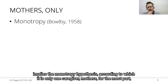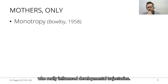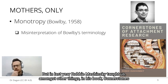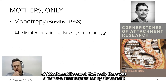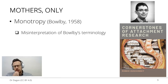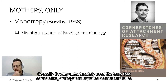This implicitly implies the monotropy hypothesis, according to which it is only one caregiver — mothers, for the most part — who really influences developmental trajectories. But as Robbie Duszynski taught us in his book 'Cornerstones of Attachment Research,' there was a massive misinterpretation by attachment researchers of Bowlby's terminology.